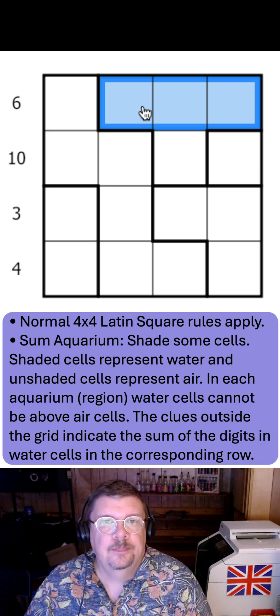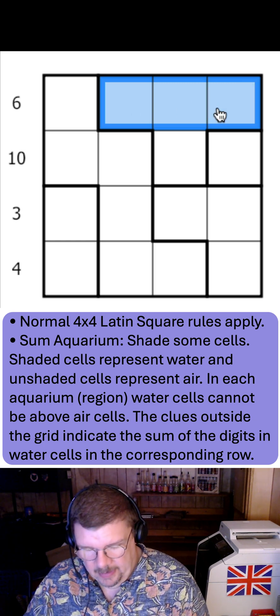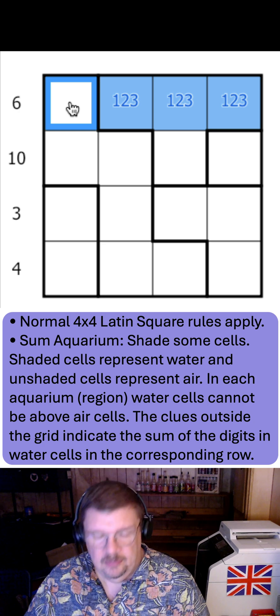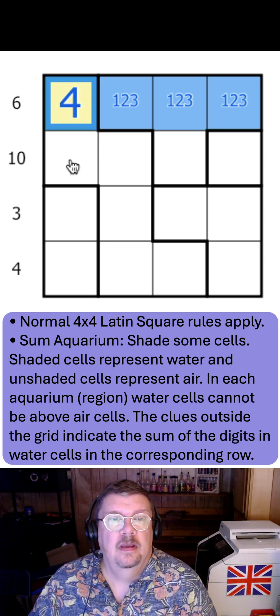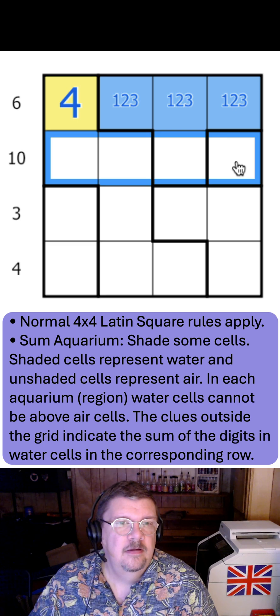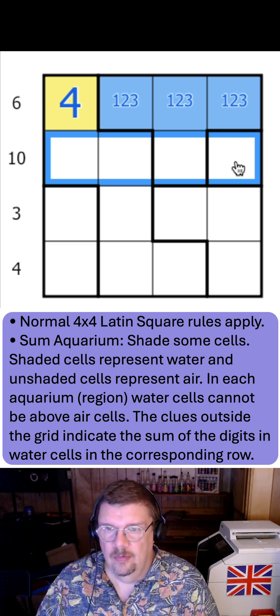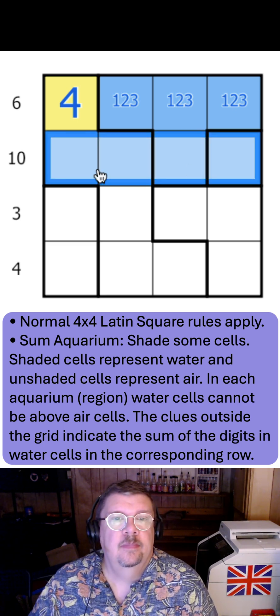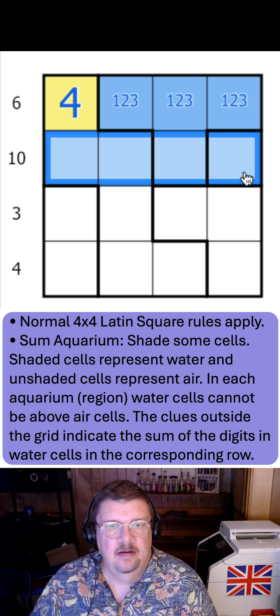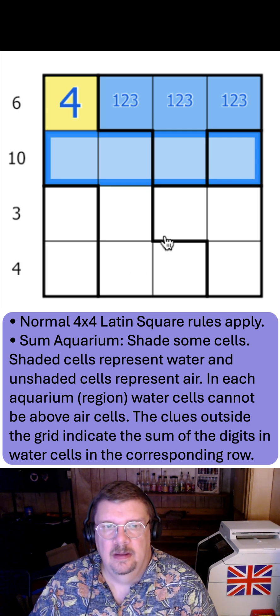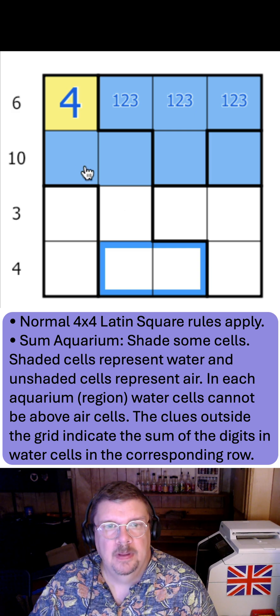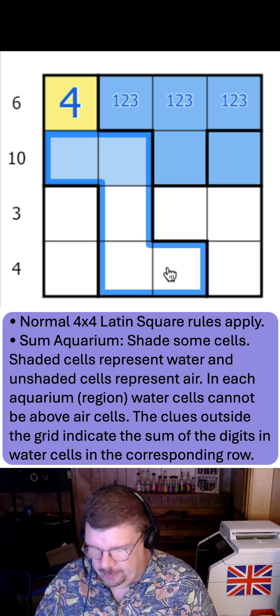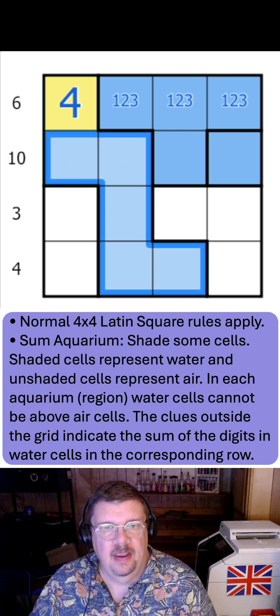There we go. And the minimum they can be is 1, 2, 3, which is 6. So that is 4 and that is air. This 10 means that these are all water because the 4 digits are going to sum to 10. This 4.